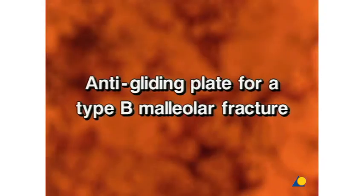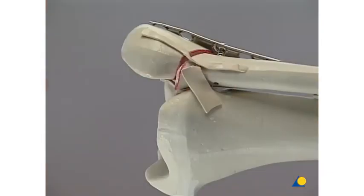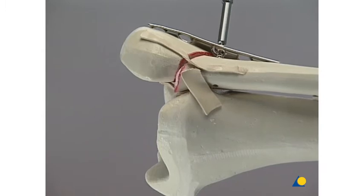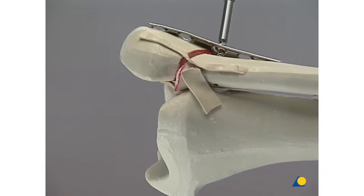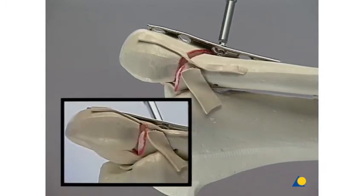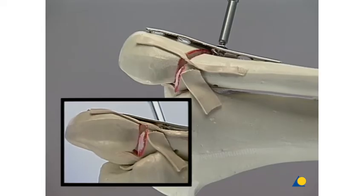Anti-gliding plate for a type B malleolar fracture. The one-third tubular plate is applied dorsally. The fracture is reduced by tightening the first screw in the proximal main fragment.